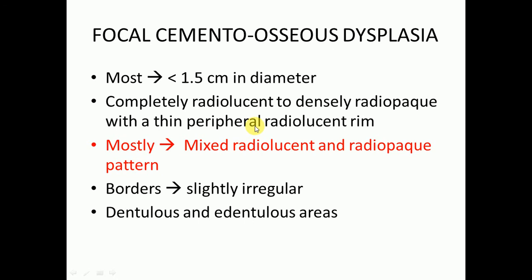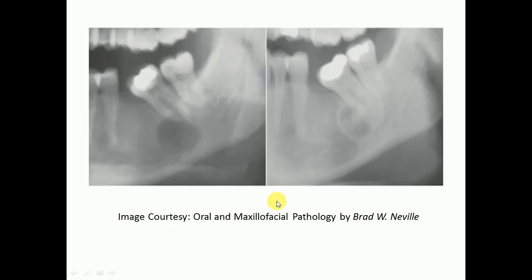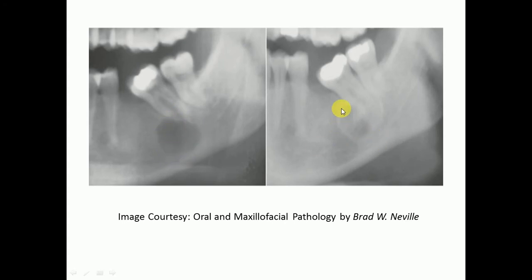Focal cemento-osseous dysplasia can be present in dentulous and edentulous areas. You can see the radiolucent area present at the edentulous area of the first molar and also at the periapical area of the second molar. With the passage of time this radiolucent area gets converted into a mixed and then into a radiopaque lesion.